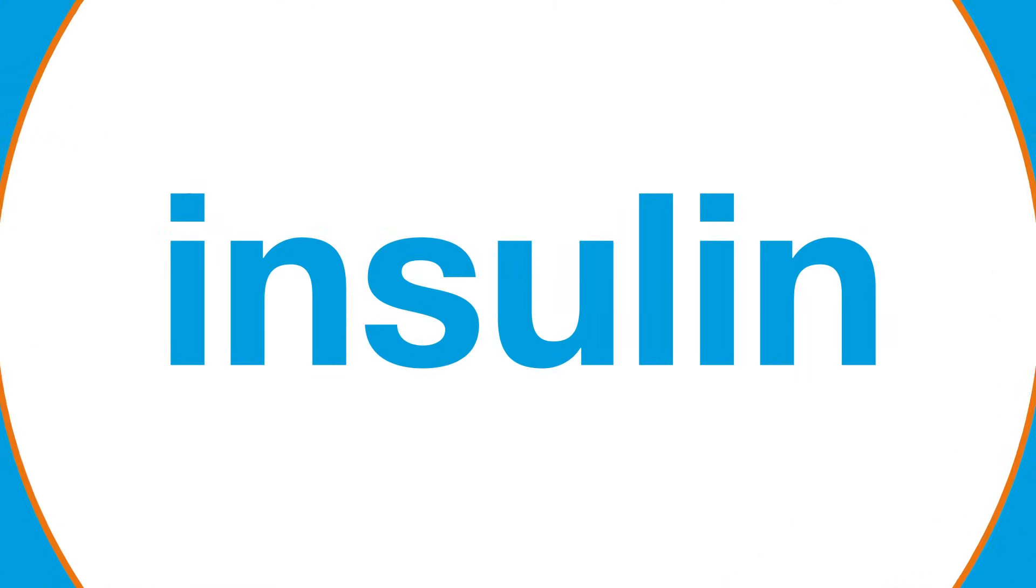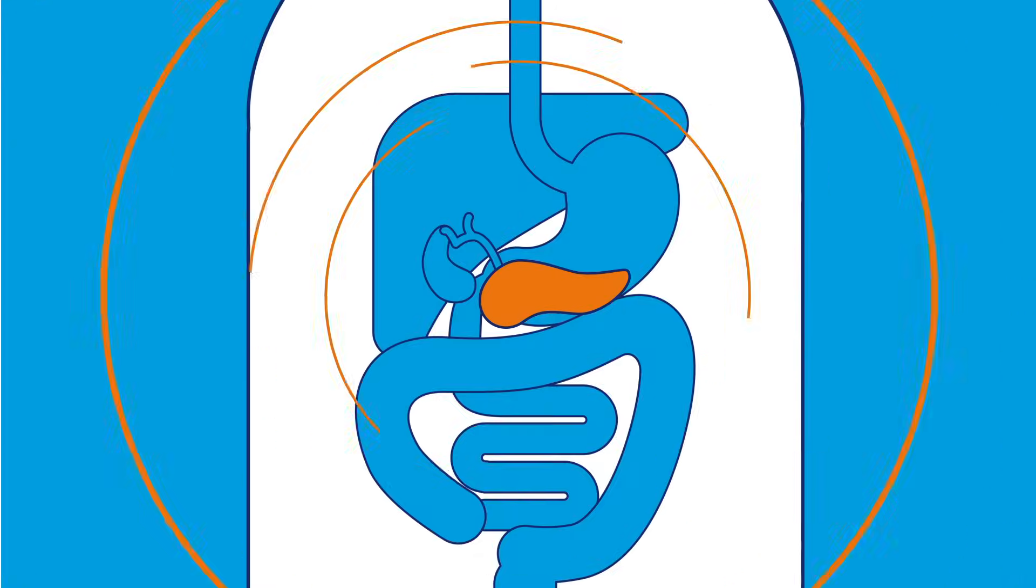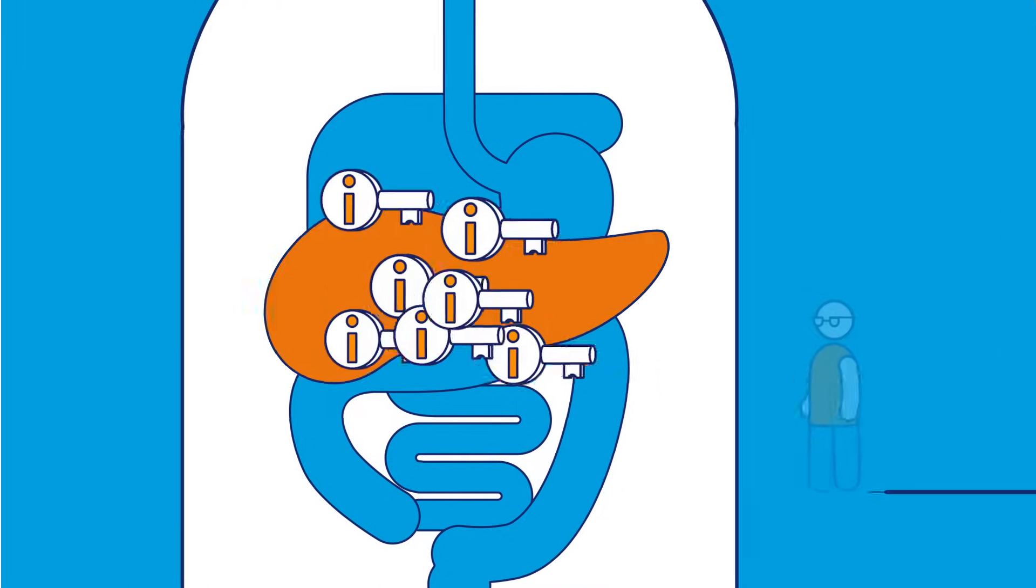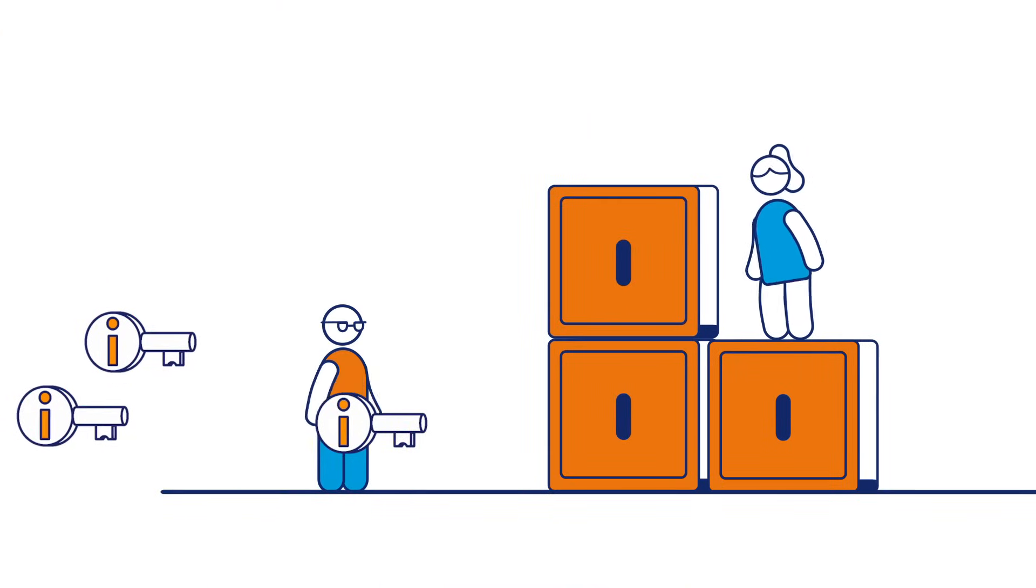We also need a hormone called insulin. It's made by our pancreas and it's insulin that allows the glucose in our blood to enter our cells and fuel our bodies.